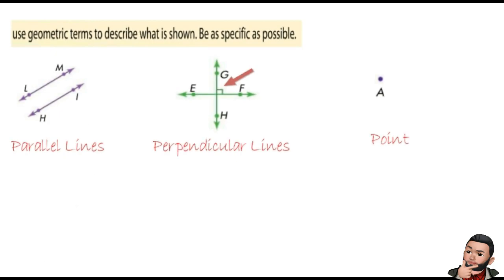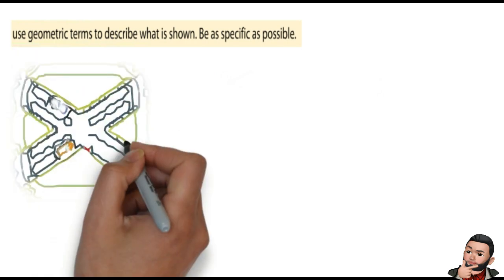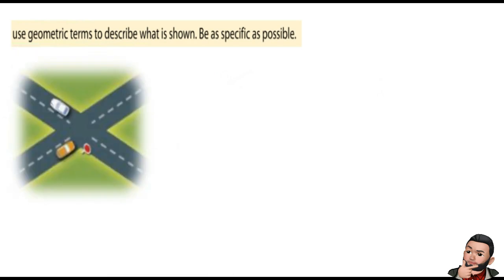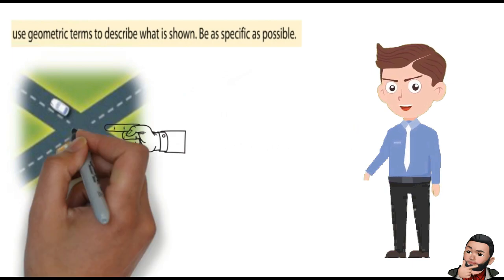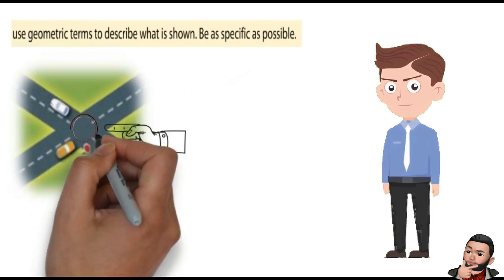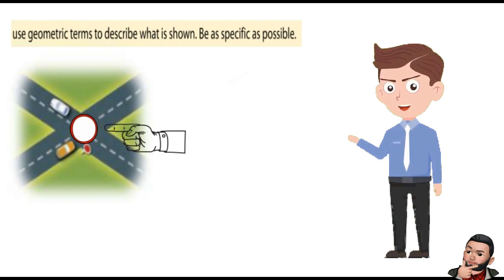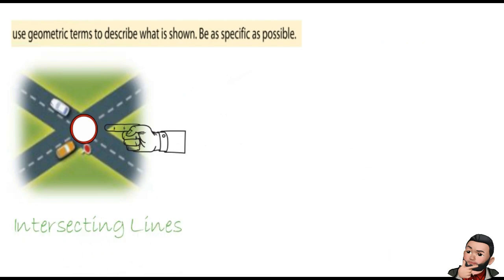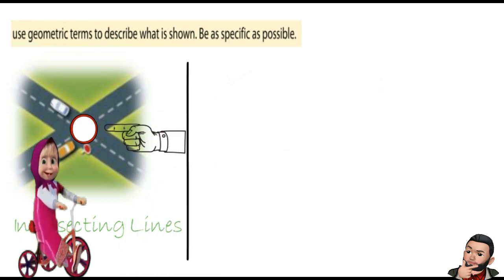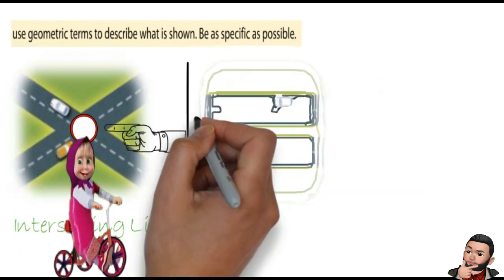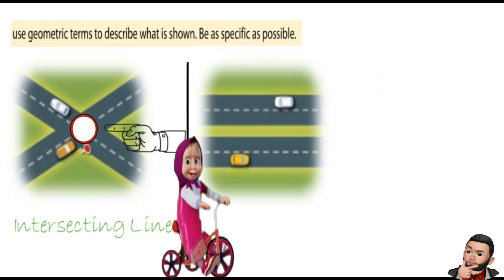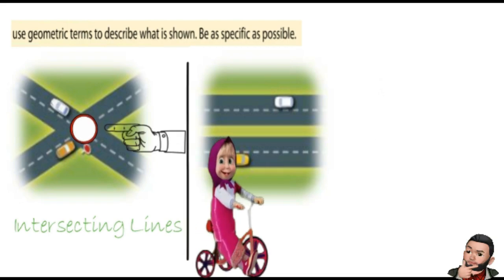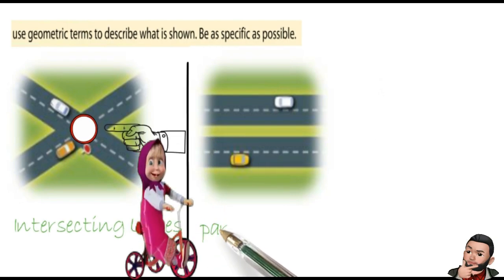Look at that. These two threads met at one point. Exactly. So we are intersecting lines. Teacher, can I answer the next question? Go ahead. Regarding these two roads, the cars never intersect, never meet, so I think these two roads are parallel to each other. Excellent.